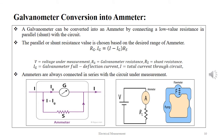A galvanometer can also be converted into an ammeter by connecting a low value resistance in parallel — that is, a shunt — with the circuit. The shunt resistance value is chosen based on the desired range of the ammeter. Numerically it is given as RG·IG = (I − IG)·RS, where RS is the shunt resistance and I is the total current flowing through the circuit. Ammeters are always connected in series with the circuit under measurement.